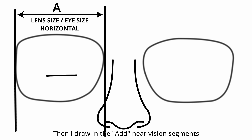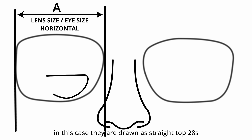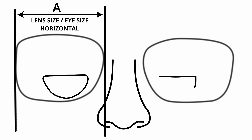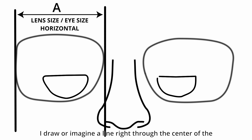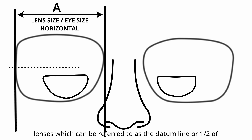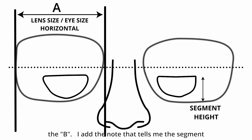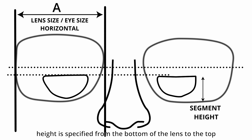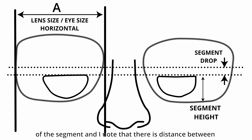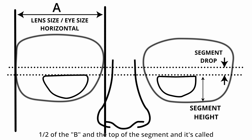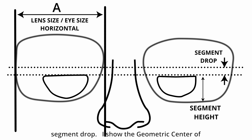Then I draw in the ADD near vision segments. In this case, they are drawn as straight top 28s. I draw or imagine a line right through the center of the lenses, which can be referred to as the datum line or one half of the B. I add the note that tells me the segment height is specified from the bottom of the lens to the top of the segment. And I note that there is a distance between half of the B and the top of the segment, and it's called segment drop.